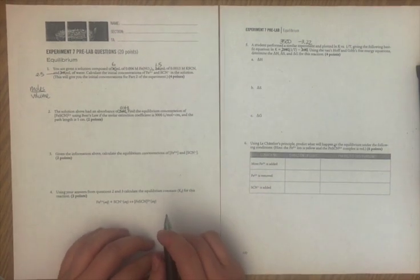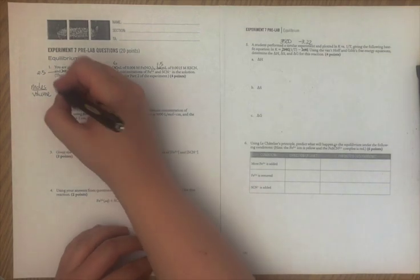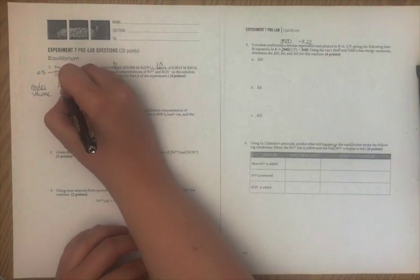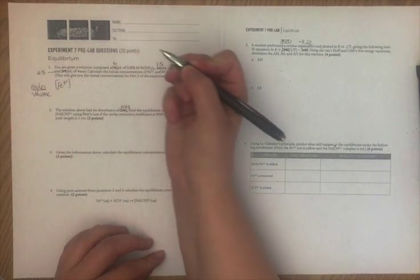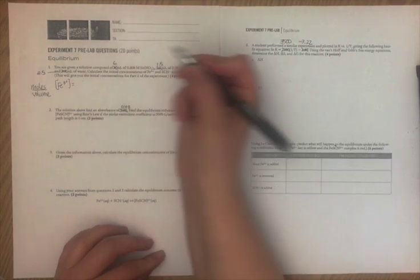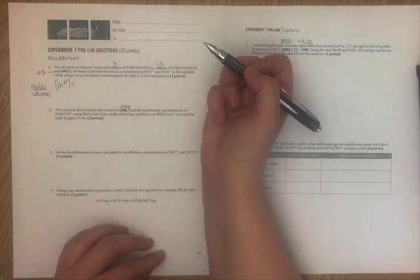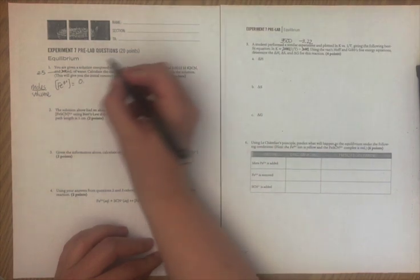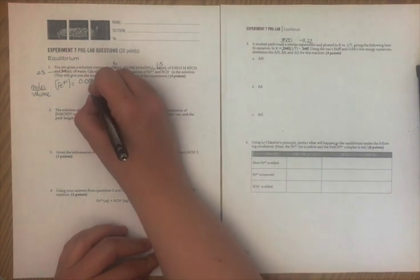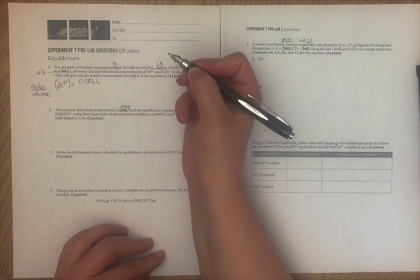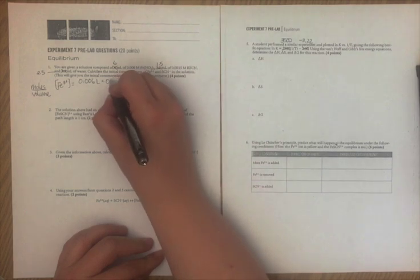So I'll start with calculating the concentration of Fe³⁺. This will just equal the number of moles. In order to find the moles, I multiply the molarity times the volume. I used, in this case, 6 milliliters, 0.006 liters.